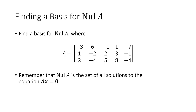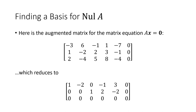Let's work through an example. We want to find the basis for the null space of a given matrix. Remember, the null space is the set of all solutions to Ax = 0. We'll solve that equation and write the solution in parametric form. Setting up the augmented matrix, it looks just like A with an additional column of zeros on the right-hand side. We then row-reduce that matrix.